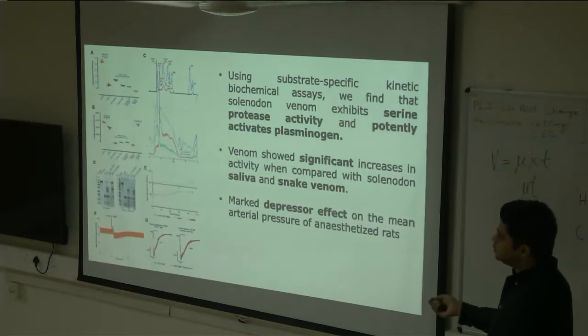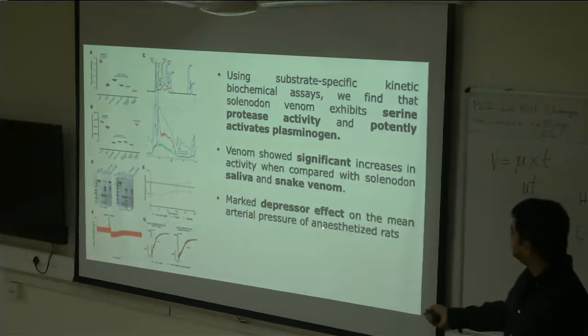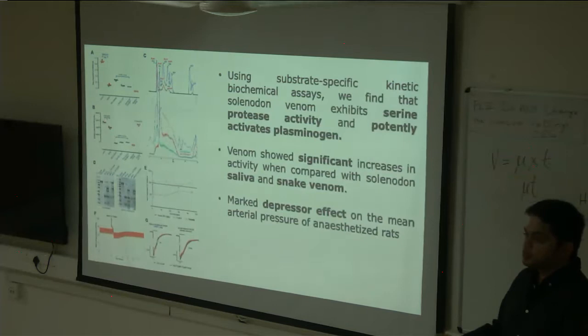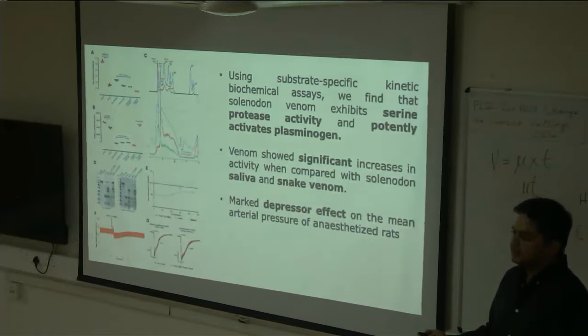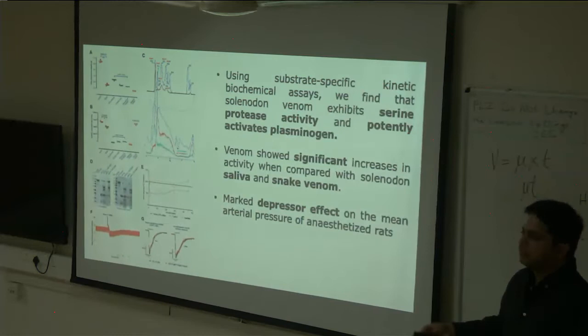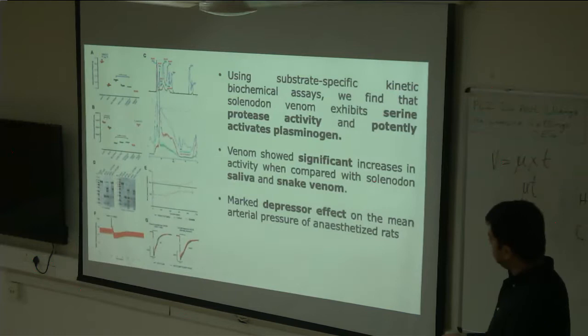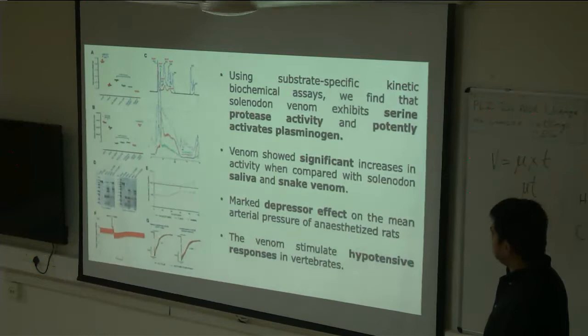What we found is that solenodon venom has a huge depressor effect on mammals — it causes a massive dip in blood pressure the moment it bites. It's the same strategy used by Komodo dragons. Contrary to popular belief that Komodo dragons are poisonous and kill via infection, they actually have venom containing something similar to kallikrein, which causes a huge dip in blood pressure and drops the animal immediately. When we look at the evolution of kallikreins across mammals, the kallikreins found in solenodon saliva are in the same clade as kallikreins of other mammals, including venomous shrews.